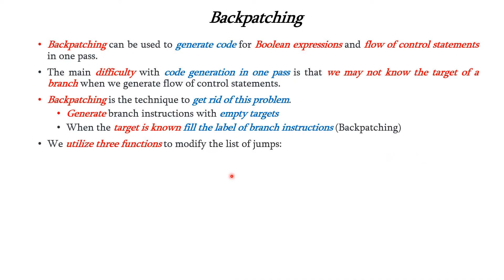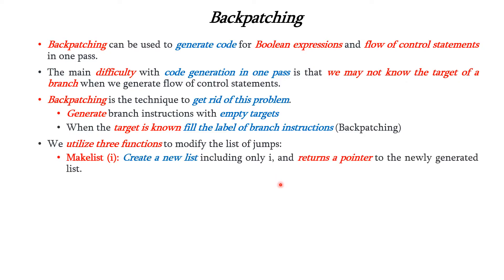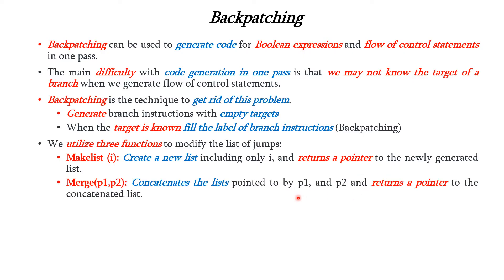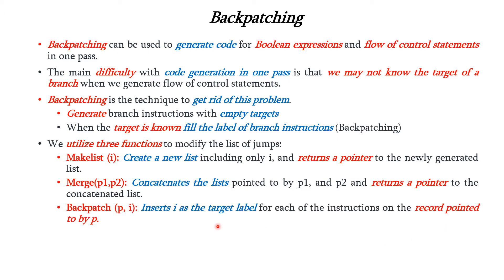We utilize three functions to modify the list of jumps or branches. First, makelist(i) creates a new list which includes only i and returns a pointer to the newly generated list. merge(p1, p2) concatenates the lists pointed to by p1 and p2 and returns a pointer to the concatenated list. backpatch(p, i) inserts i as the target label for each of the instructions on the list pointed to by p.